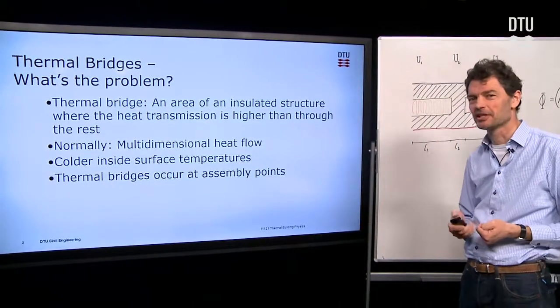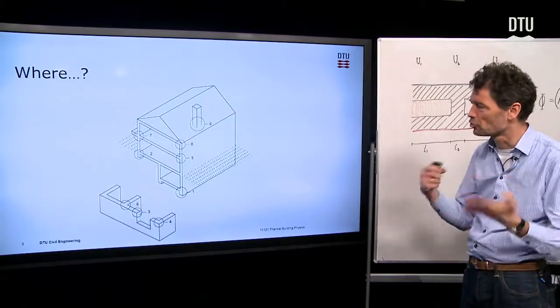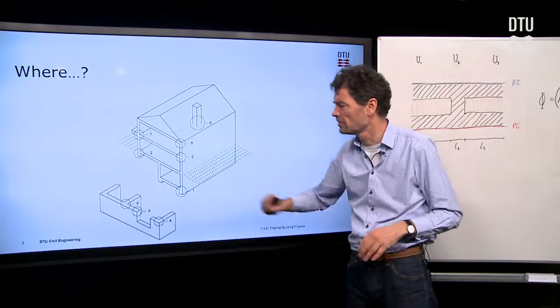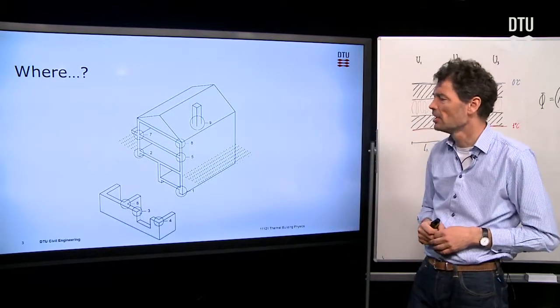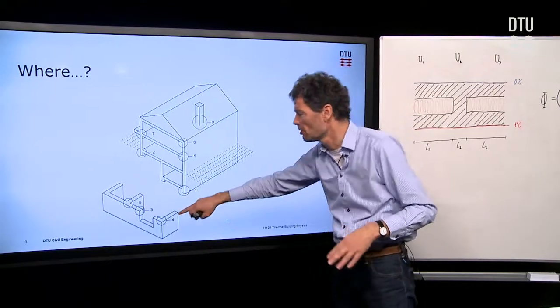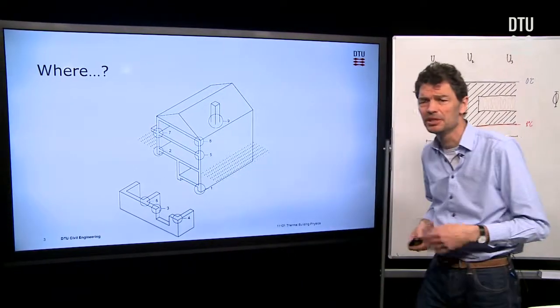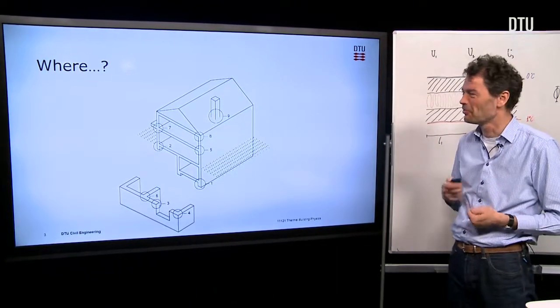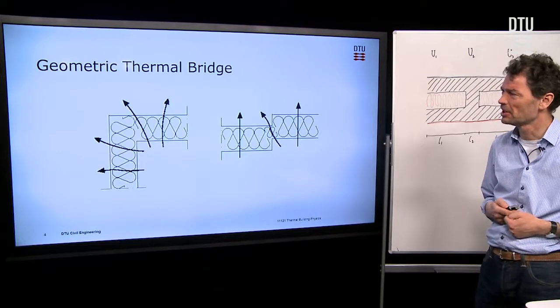Also where do they occur, these thermal bridges? Roughly we could say that they occur at assembly points or joints that we have in our buildings. Here are just some indications with various numbers and circles at intersections and joints, for instance between windows and walls, but also just where two walls meet each other.